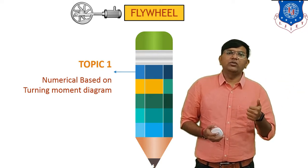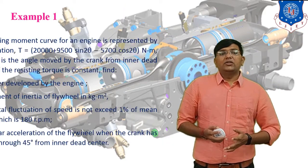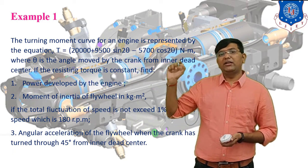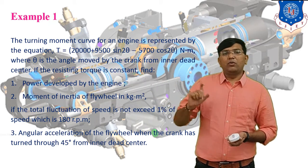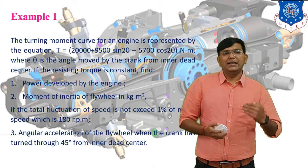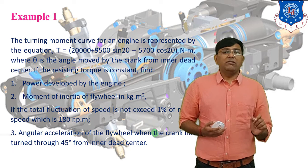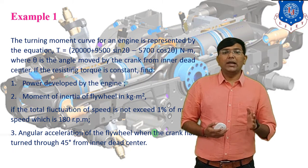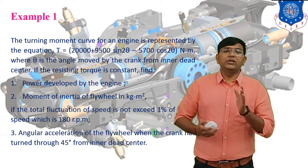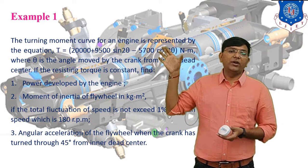Based on these equations we have to solve one more numerical based on the turning moment diagram. In this numerical, one equation is given for the mean resisting torque line. The turning moment curve for the engine is represented by the equation T equals 20,000 plus 9500·sin(2θ) minus 5700·cos(2θ) Newton-meters.